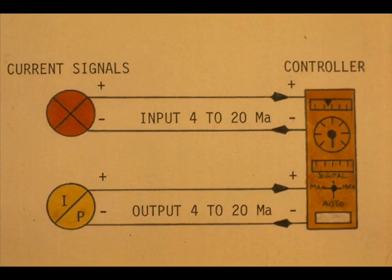Most of the signals in the control loop are two-wire signals. For instance, the input and output signals for this loop are 4 to 20 milliamp current signals.